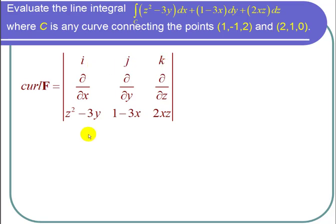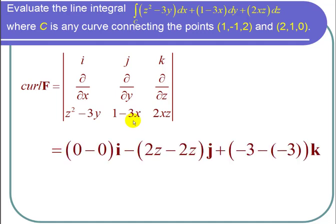For the i component, I get the partial derivative with respect to y of 2xz, and that's 0, minus the partial derivative with respect to z of 1 minus 3x, and that's also 0. So I get 0 minus 0i.